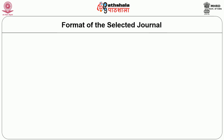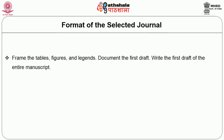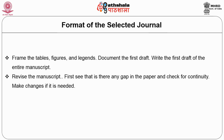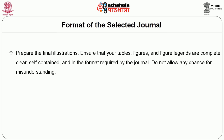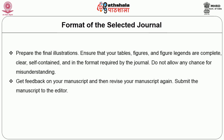Start writing the full paper in the stated format of the selected journal. Frame the tables, figures, and legends. Document the first draft of the entire manuscript. Revise the manuscript: check for gaps and continuity, make necessary changes, polish the text, check grammar and spelling, format the document, and check the references. Prepare the final illustrations — ensure tables, figures, and legends are complete, clear, self-contained, and in the required journal format.